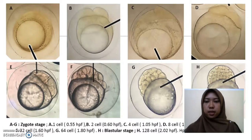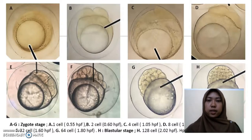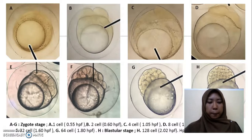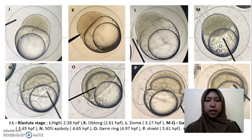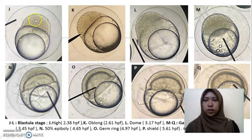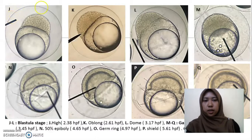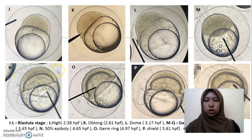At the 8-cell stage (stage D), some eggs were deformed — cells were tilted either right or left and the cleavage of the cells was not observable. In the blastular stage (stage H), only 128 cells were recorded, then it fast-forwarded to the high stage. The difference in number of cells was not really obvious, so data was limited here.